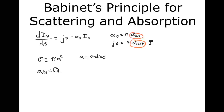You can imagine these Q coefficients as scalars that take our geometric size of our scatterer or absorber and account for things like what it's made of, what color it is, and how big it is with respect to the incoming radiation. These coefficients scale the geometric cross-section because generally the coefficients for absorption and scattering should depend on the geometric size of our scatterer or absorber.